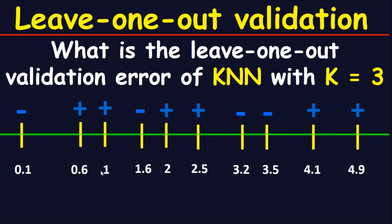Now move to the third point, which is 1. Look at the closest three points — this point, this point, and this point. The signs are: negative, positive, negative. The majority of signs is negative. However, the original point we are looking for is positive, so this is an error.